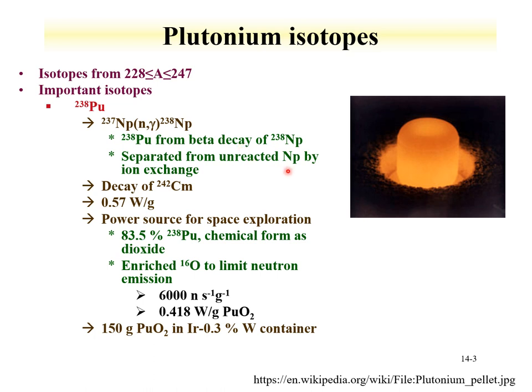Plutonium-238 is separated from the neptunium-237 target by ion exchange. You can also obtain it by the decay of curium-242. Since it's a relatively short-lived alpha-emitter, it has a lot of energy associated with it, about half a watt per gram, making it useful as a power source for space exploration. You can make plutonium-238 oxides with up to around 84% plutonium-238. As this oxide is formed, they actually enrich the oxygen in oxygen-16 to limit neutron production.